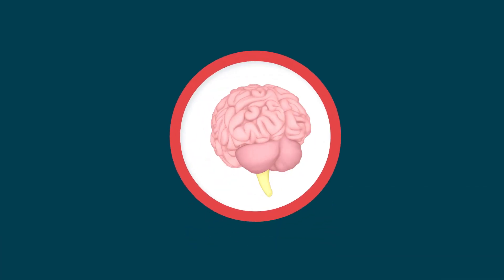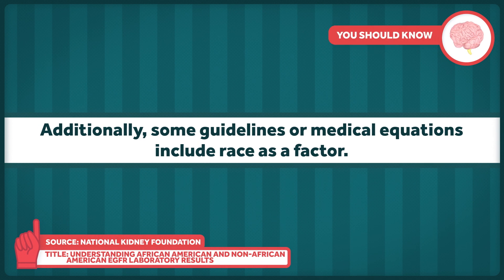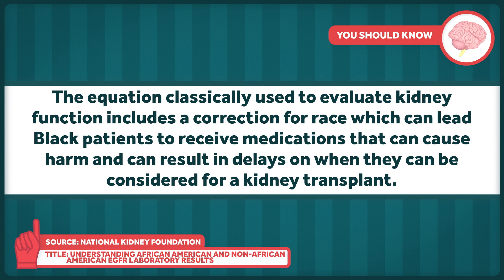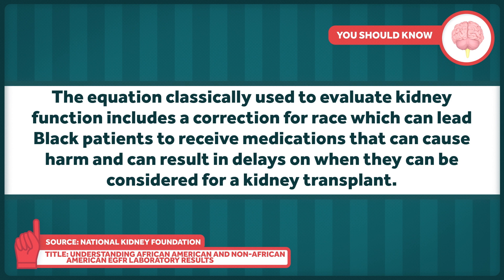For example, a black patient with cystic fibrosis may experience a diagnostic delay because a physician associates this disease with white people. Additionally, some guidelines or medical equations include race as a factor. Most notably, the equation classically used to evaluate kidney function includes a correction for race, which can lead black patients to receive medications that can cause harm, and can result in delays on when they can be considered for a kidney transplant.